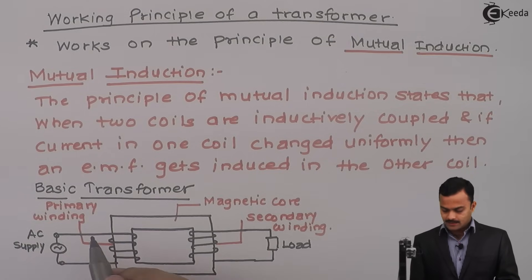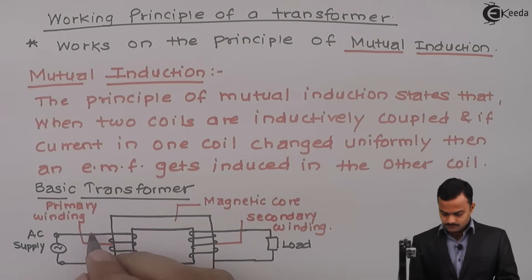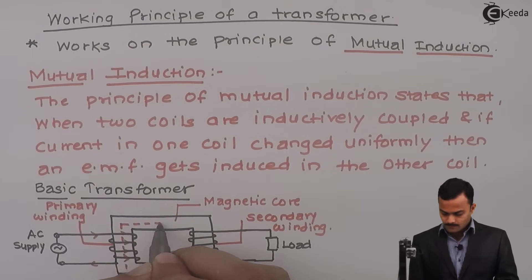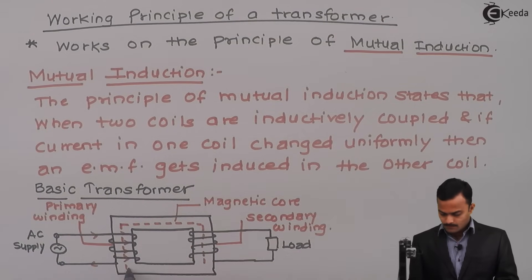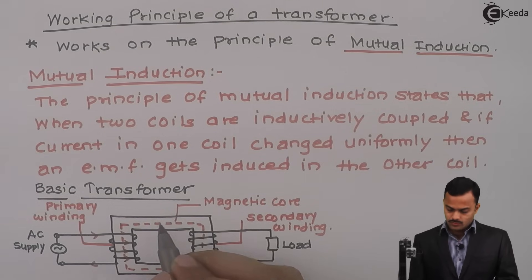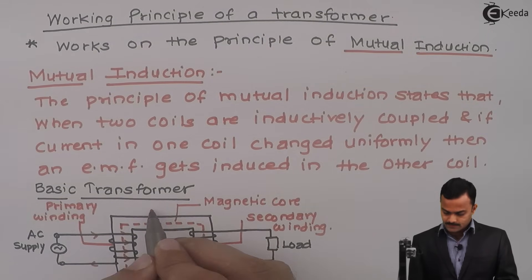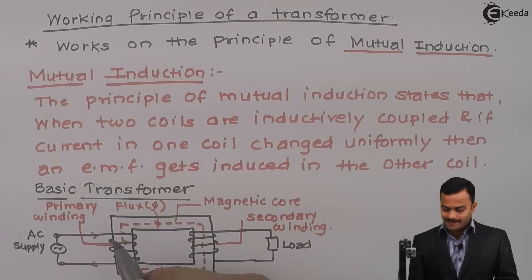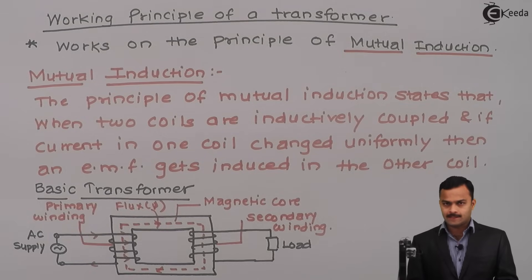Because of this AC supply, current will pass through the primary winding. This current will give rise to magnetic flux, which will pass through this magnetic core. This magnetic flux, which is changing with respect to time, gets linked with the primary winding and will give rise to an EMF by Faraday's law of electromagnetic induction. That EMF is called self-induced EMF.